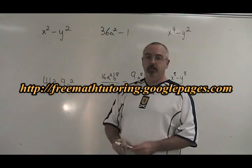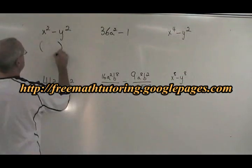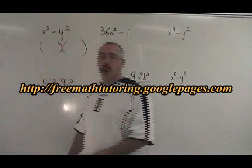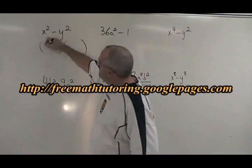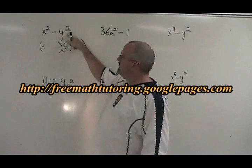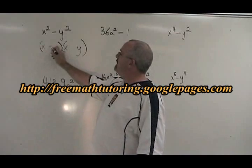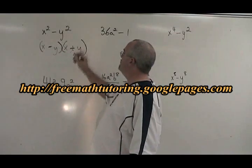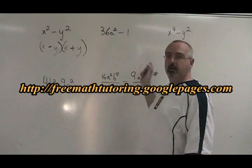The way to do a difference of squares is very simple. You write two sets of brackets because your answer will be a pair of binomials. The square root of the first term goes in both first positions. The square root of the second term goes in both second positions. And you put one minus sign and one plus sign. It always works that way, so I will prove it by doing several more examples.